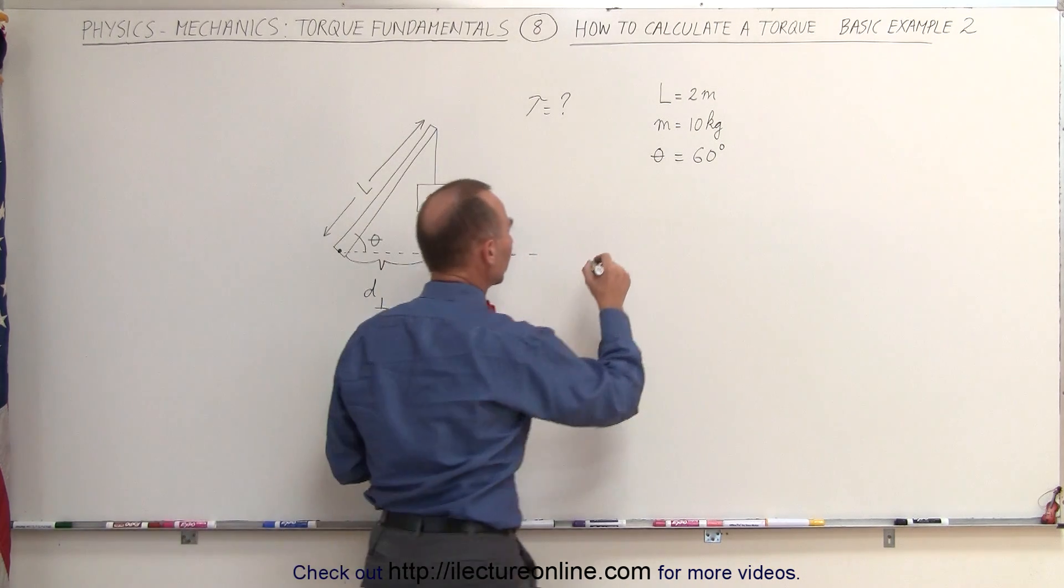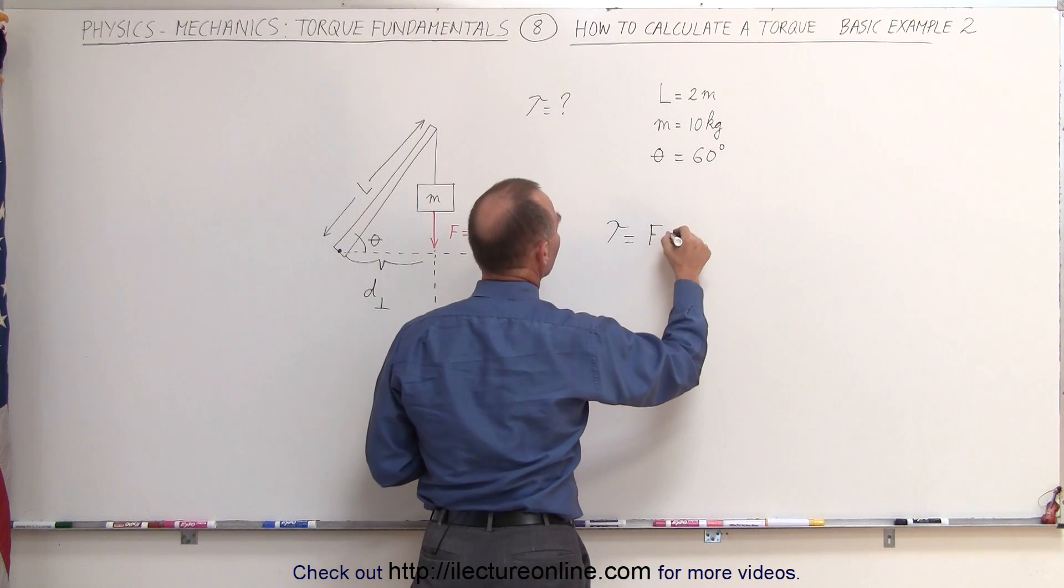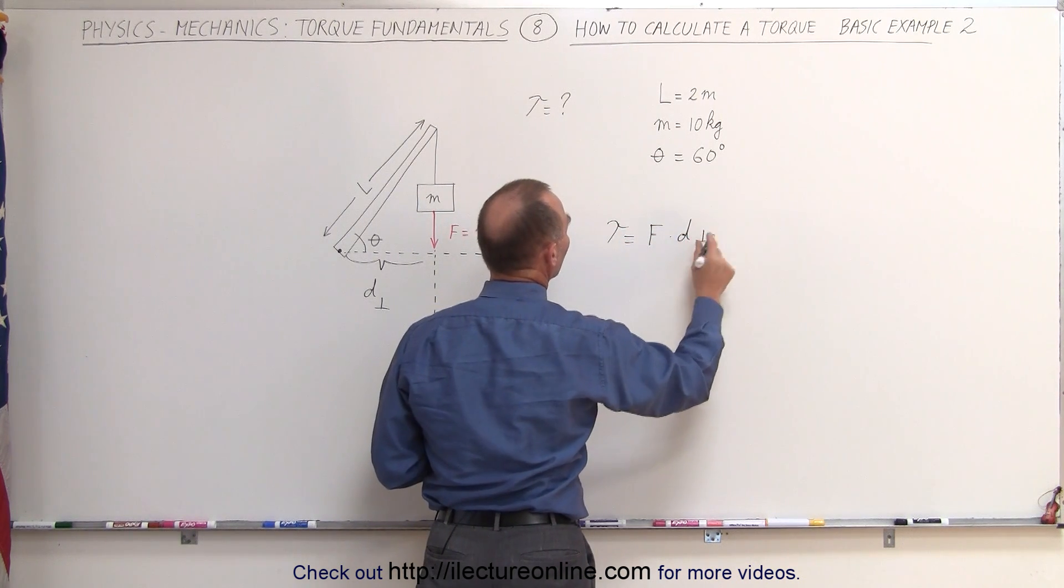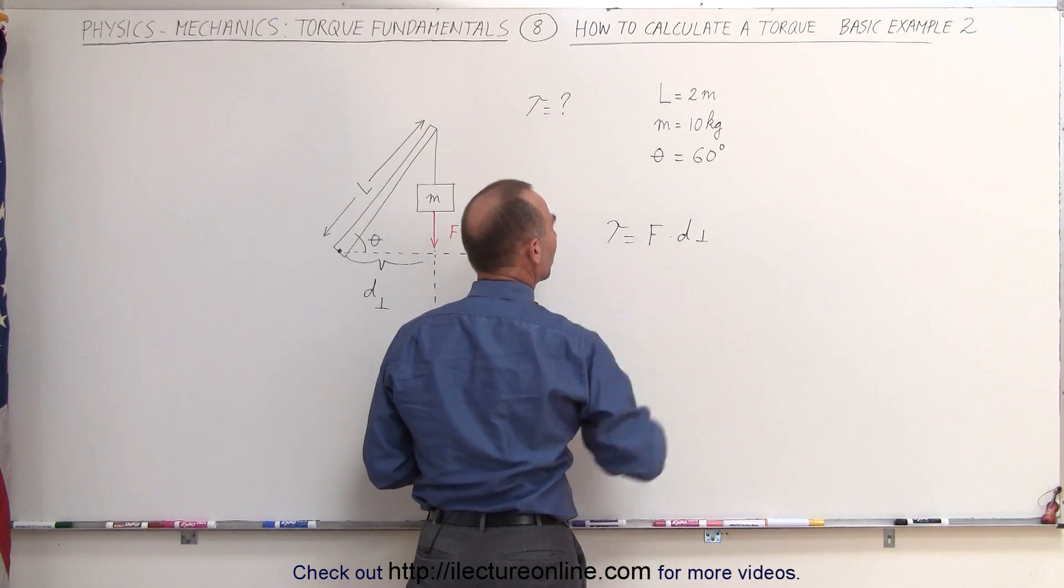In other words, we can say that the torque is equal to the force times the perpendicular distance from the line of action of force to the pivot point.